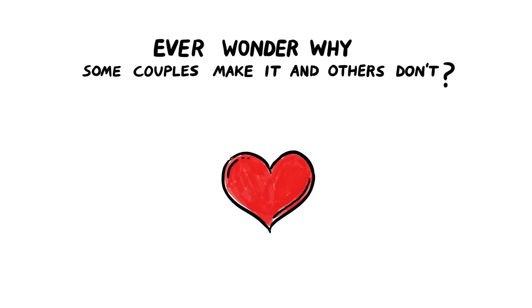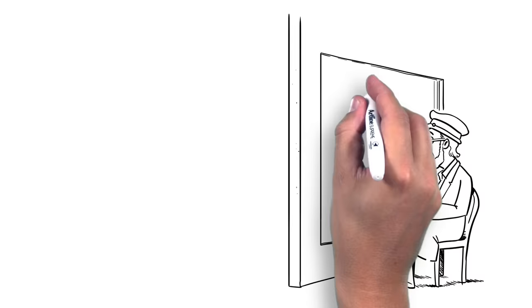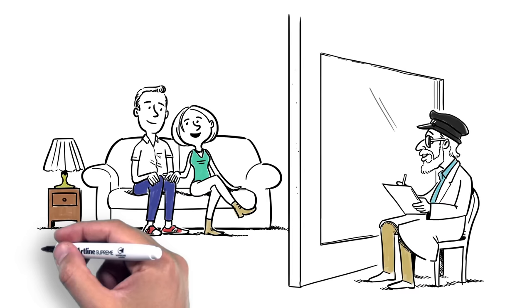Ever wonder why some couples make it and others don't? Scientist Dr. John Gottman did. He spent 40 years studying thousands of couples to find out exactly what separates the relationship masters from the relationship disasters.